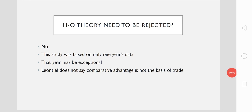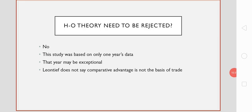Furthermore, Leontief used input-output requirements for import substitutes in the United States rather than actual import commodities. He should have collected the input requirements of import commodities directly, as the capital-labor ratio may not be the same in both nations. Finally, Leontief did not actually rule out the relevance of comparative advantage as a basis of international trade.